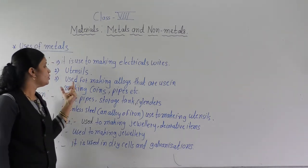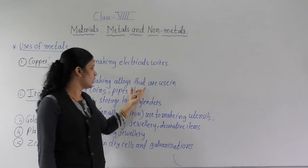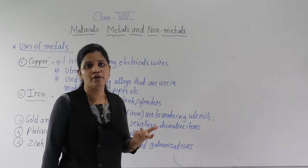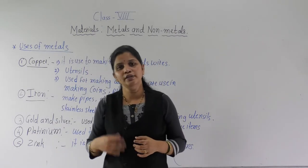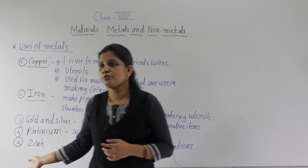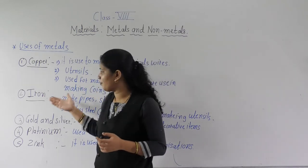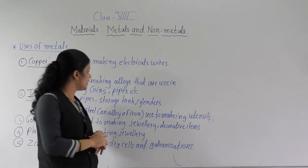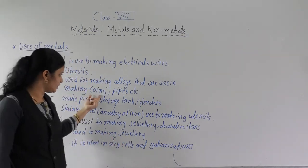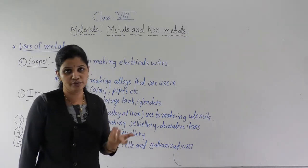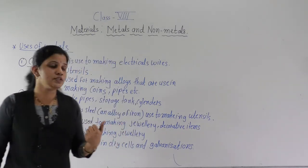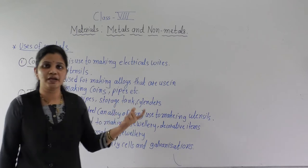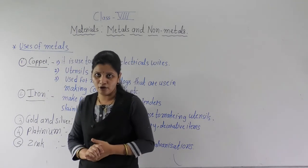Now the next use of copper — it is used for making alloys that are used in making coins and pipes. Alloys means a mixture of more than one metal. So from copper, different things can be made. Coins, which we regularly use, are an alloy of copper. Pipes are also made up of an alloy of copper.